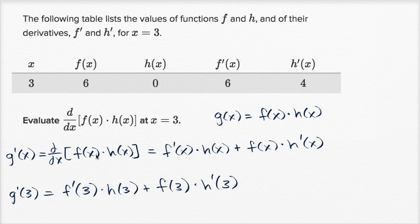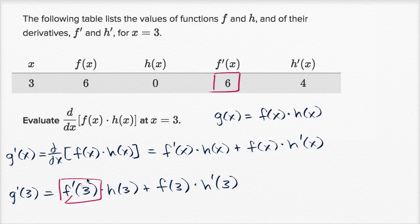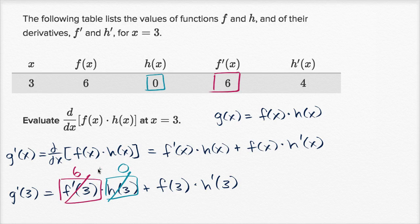They give us what all of these things evaluate to. f prime of three, right over here, when x equals three, is equal to six — so that's six. h of three — they give us that too — when x equals three, the value of h is zero. So this first term is six times zero, which is going to be zero.